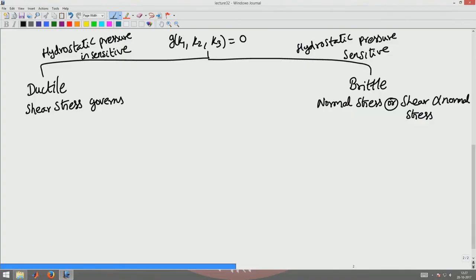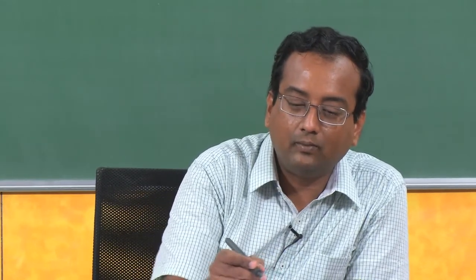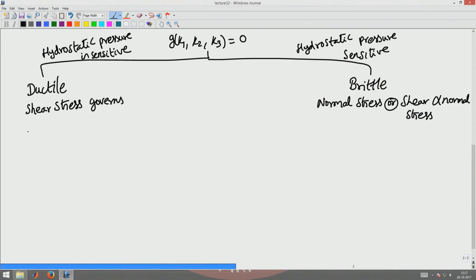Next, since the mode of failure is ductile or it is the shear stress that governs the failure not the hydrostatic pressure, these pressure insensitive materials are governed by the deviatoric stress, sigma deviatoric which we have defined in previous lectures as sigma minus trace of sigma by 3 times identity. This is called as a deviatoric stress because trace of sigma corresponds to the hydrostatic pressure. And that hydrostatic pressure won't cause failure in these bodies which are ductile which shows a ductile mode of failure.